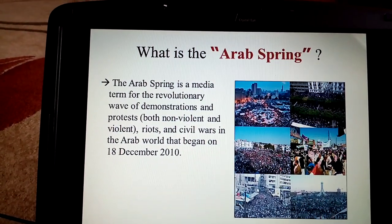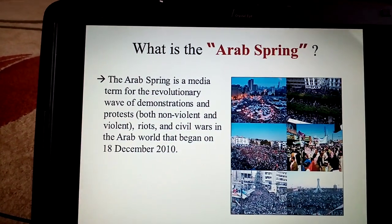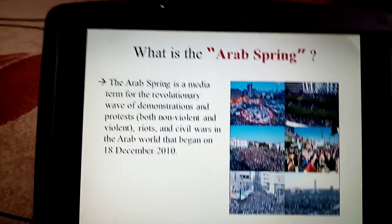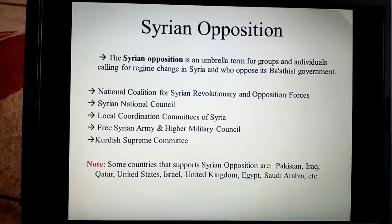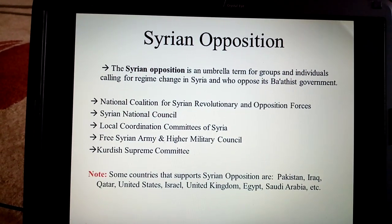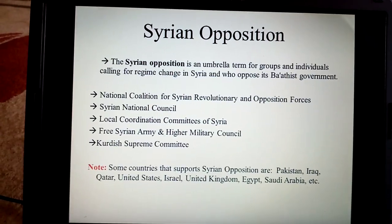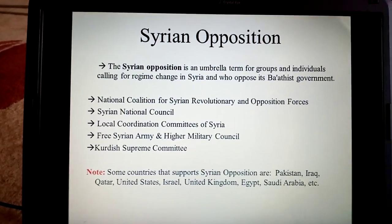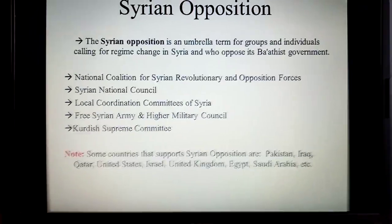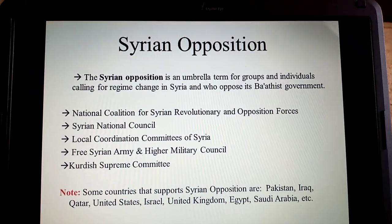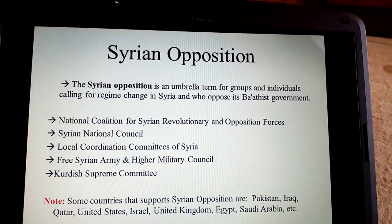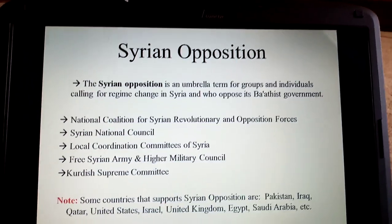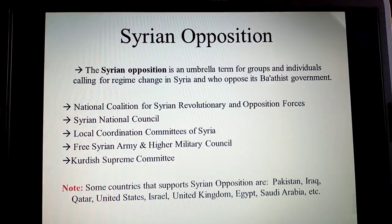At the same time, Russia also tried to improve its influence against the USA, trying to hold the Bashar al-Assad regime in power. Right now there is a civil war between the main opposition sides. The Syrian opposition is an umbrella term for groups and individuals calling for regime change in Syria who oppose the Ba'ath government. The main actors include the National Coalition for Syrian Revolutionary and Opposition Forces, the Syrian National Council, the Local Coordination Committees of Syria, the Free Syrian Army and Higher Military Council, and the Kurdish Supreme Committee.